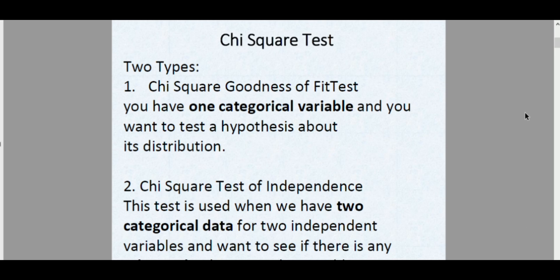Good day. We'll discuss chi-square tests. There are two types: the first is the chi-square goodness of fit test, and the second is the chi-square test of independence. The first is used when you have one categorical variable and want to test a hypothesis about its distribution. The chi-square test for independence is used when we have two categorical variables and want to see if there is any relationship between them. Our focus for this video is the chi-square test of independence.